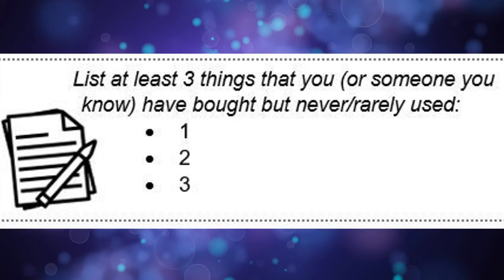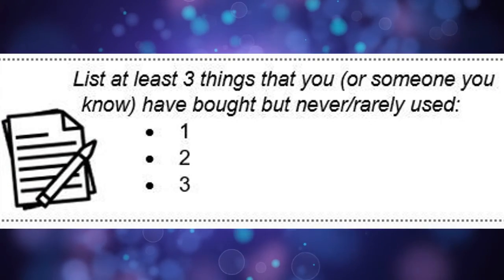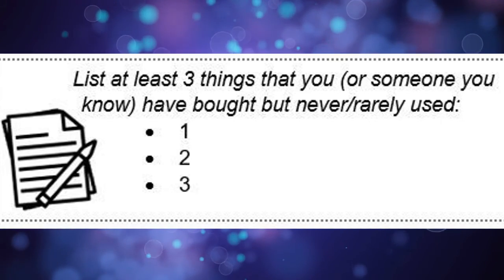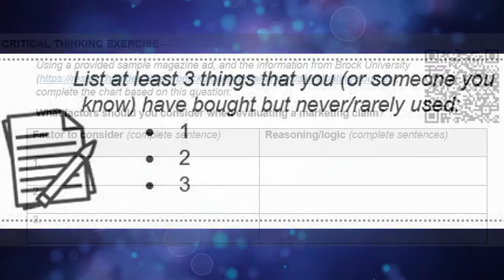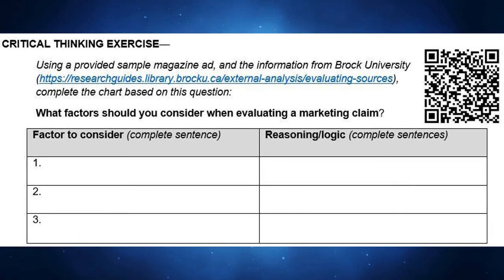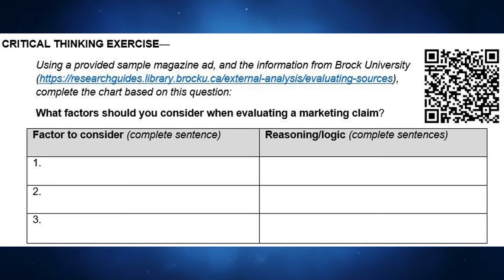Journal: list at least three things that you or someone you know have bought but never or rarely use. Critical thinking exercise: using a provided sample magazine ad and information from Brock University, complete the chart based on the question — what factors should you consider when evaluating a marketing claim? List the factors on the left side and your reasoning in complete sentences on the right side.